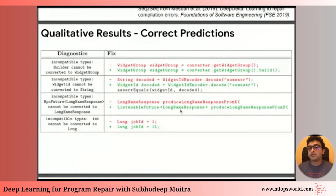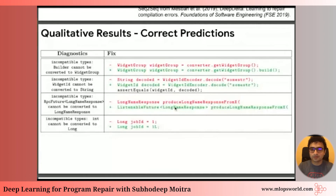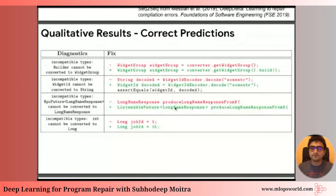Let's look at a harder fix — example number three. 'longNameResponse' was not the right approach; it should instead have been a 'ListenableFuture' with a type parameter of 'longNameResponse'. This edit is actually quite complicated because it involves inserting a type application along with several different operations.